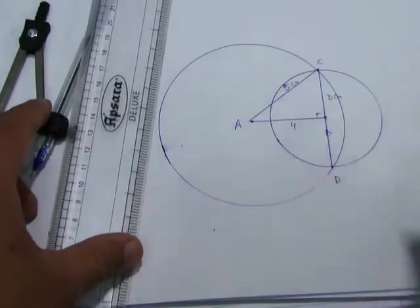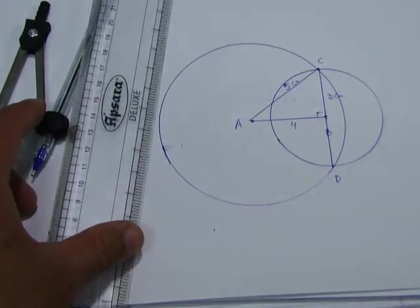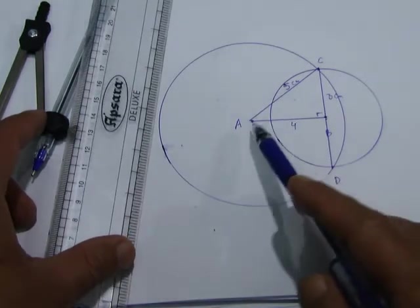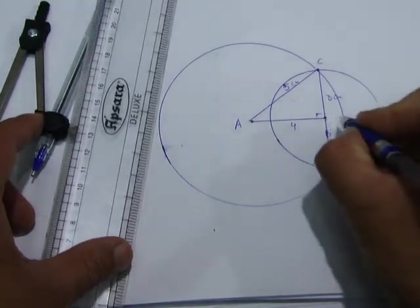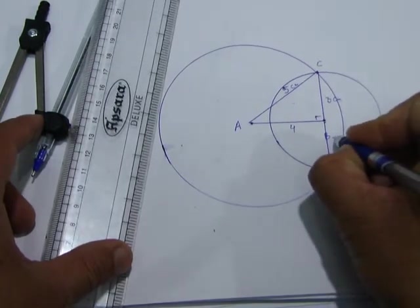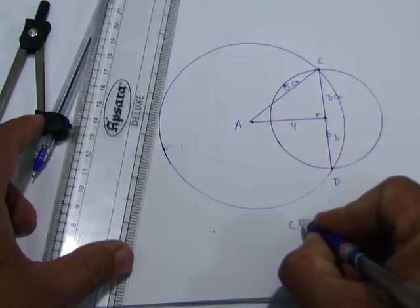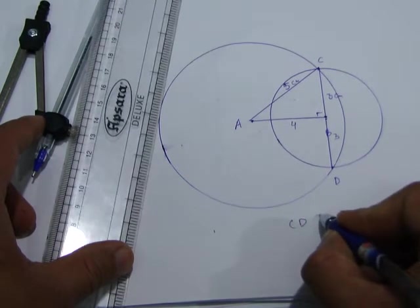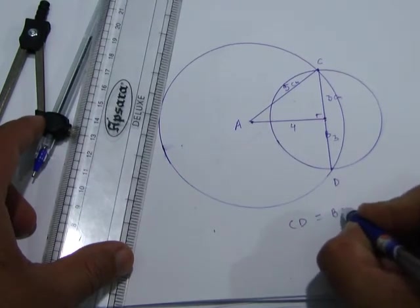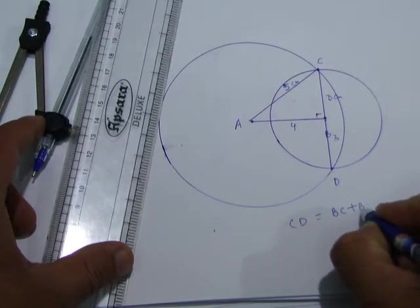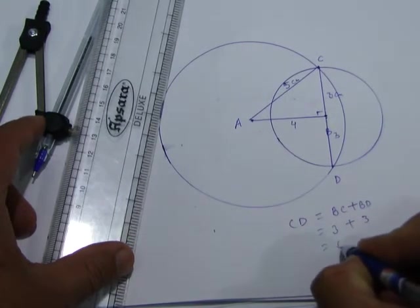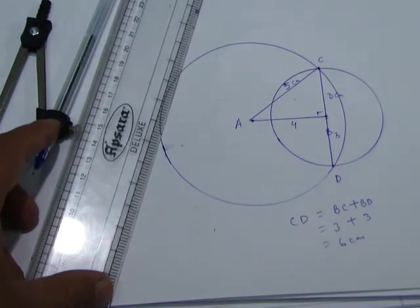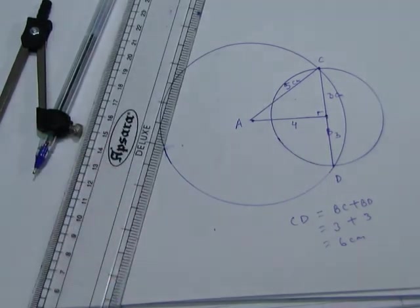The length of BC is 3. We have studied that a perpendicular drawn from the center of a circle to a chord bisects the chord. Therefore BD is also 3. So CD equals BC plus BD, which is 3 plus 3, making 6 cm. The length of the common chord is 6 cm.